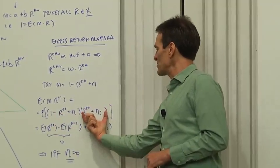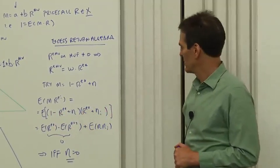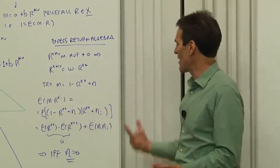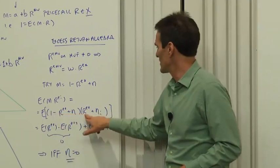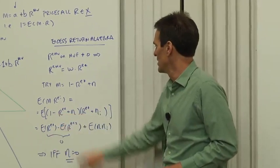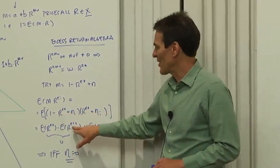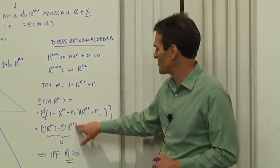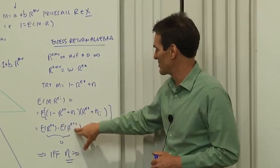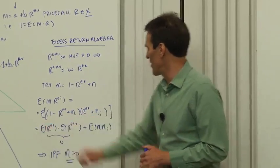There's my arbitrary excess return. Now, take the expected value of that product. What do you get? 1 times RE star is RE star. RE star times RE star is RE star squared. But RE star times any excess return generates the mean of that excess return. So those two things are equal and go away.